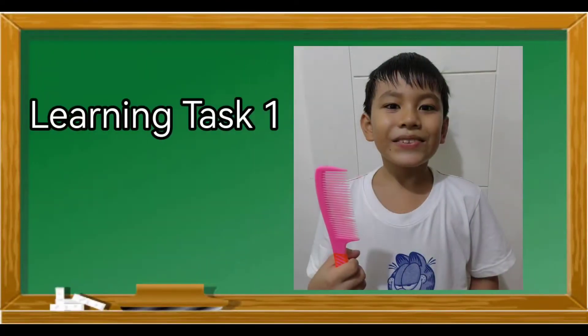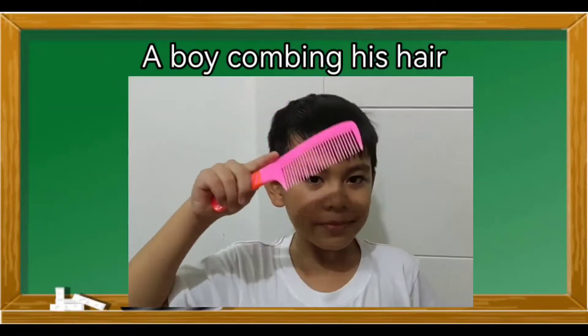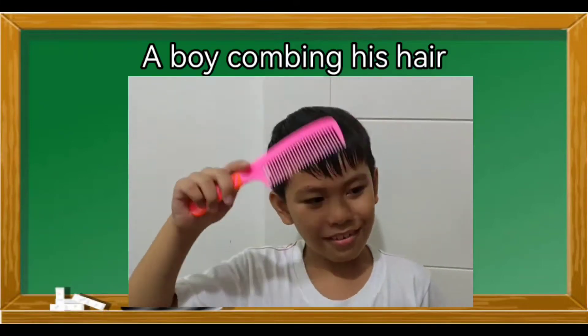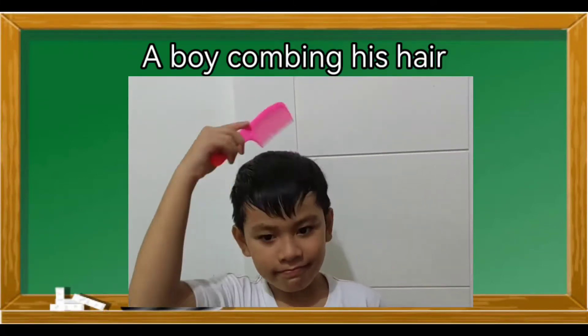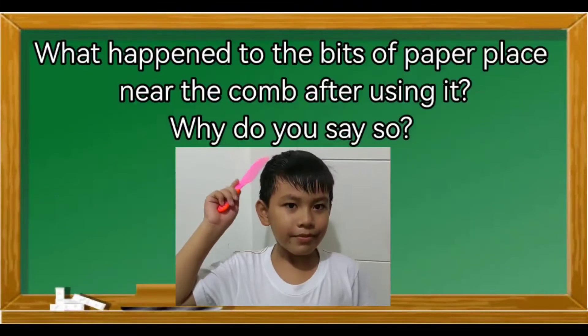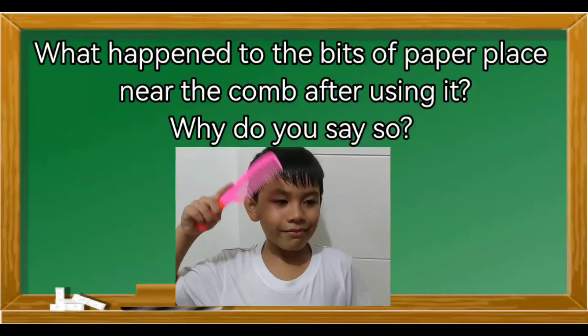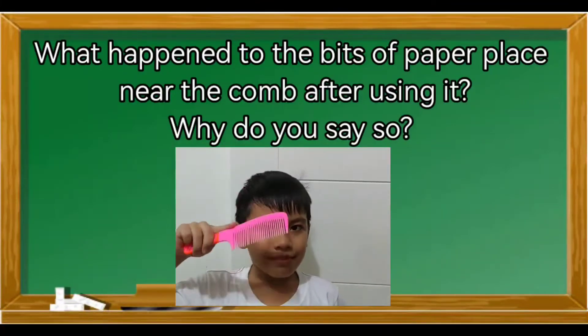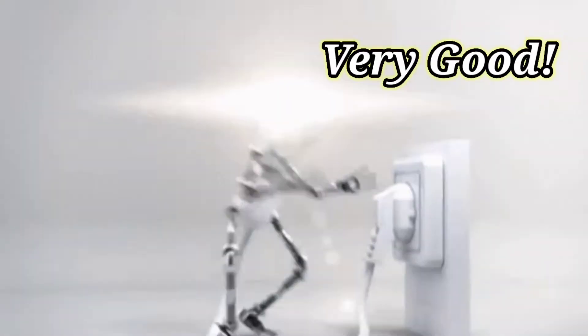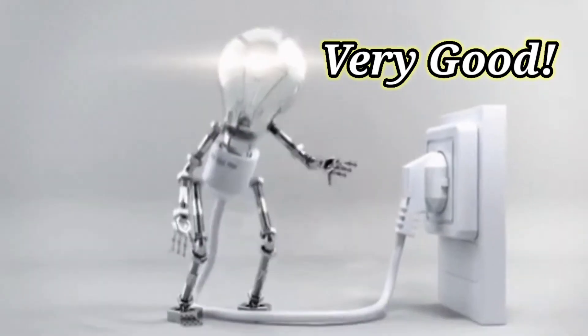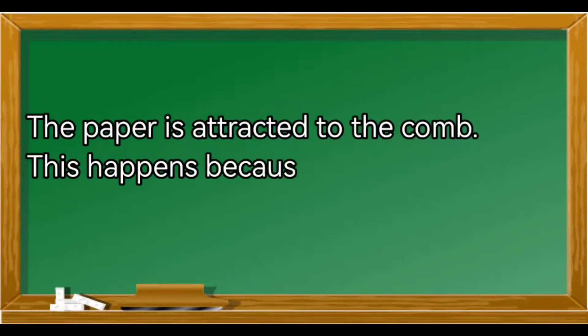Learning Task 1: A boy combing his hair. What happened to the bits of paper placed near the comb after using it? Why do you say so? Very good! The paper is attracted to the comb.